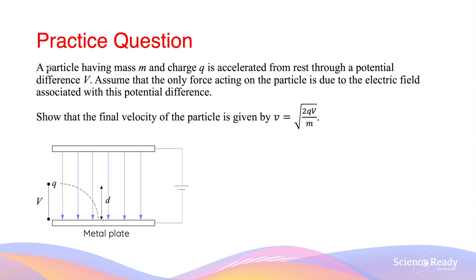Now let's look at a few practice questions. A particle having mass m and charge q is accelerated from rest — so the initial speed is zero — through a potential difference of V. Assume the only force acting on the particle is due to the electric field. Show that the final velocity is given by v equals the square root of 2qV over m. We can show this by applying the law of conservation of energy: the work done equals the charge multiplied by the potential difference.